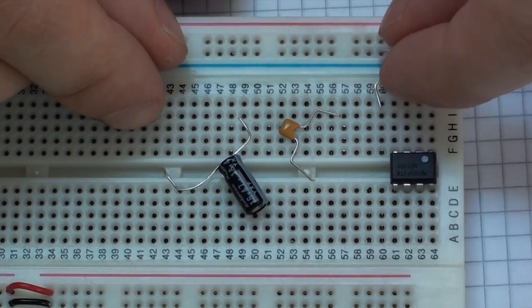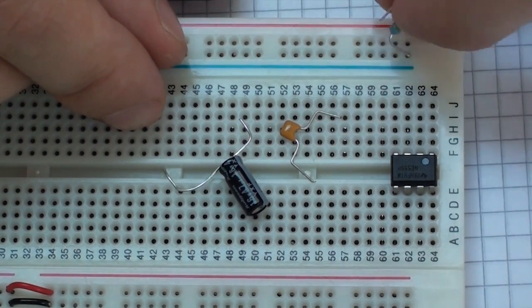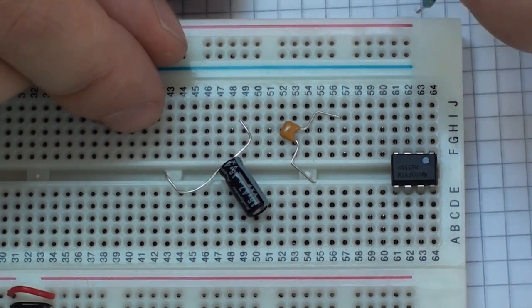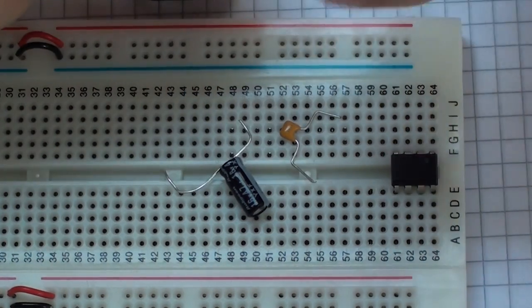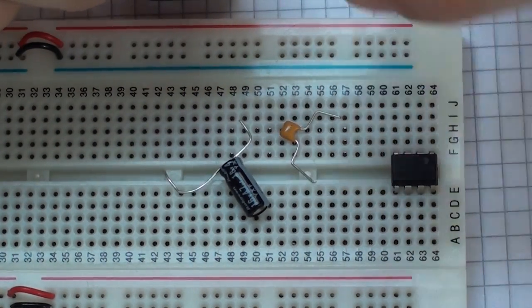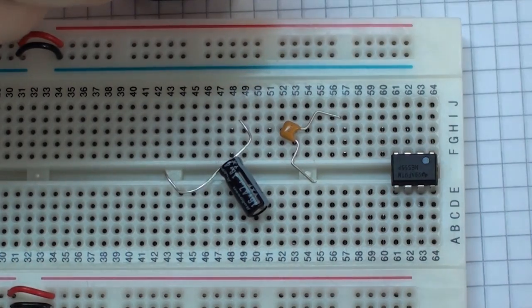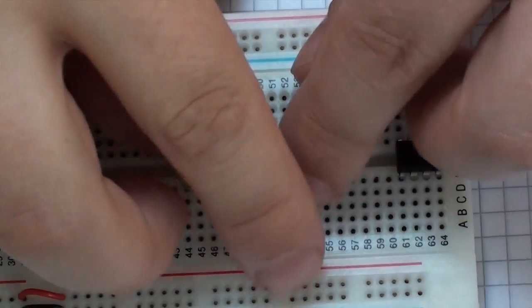Now I do not happen to have a 14.6K resistor. But I do have a 4.7K resistor and a 10K resistor. Which means that I can get very close to 14.7K resistor. So within a reasonable amount. That should do it for a circuit.